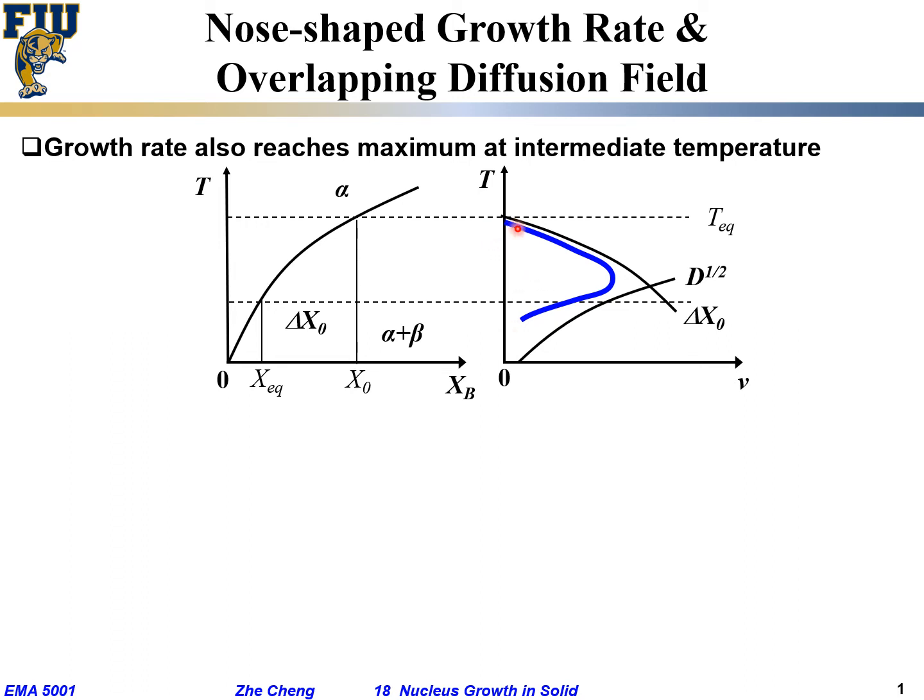So net-net, this is our similar nose-shaped curve for velocity growth rate. Interestingly, similarly, we also have this nose-shaped curve for growth rate. Which means, in order for fastest growth, I cannot be too high temperature, I do not have enough driving force. On the other hand, I cannot have too low temperature because I do not have enough diffusion.